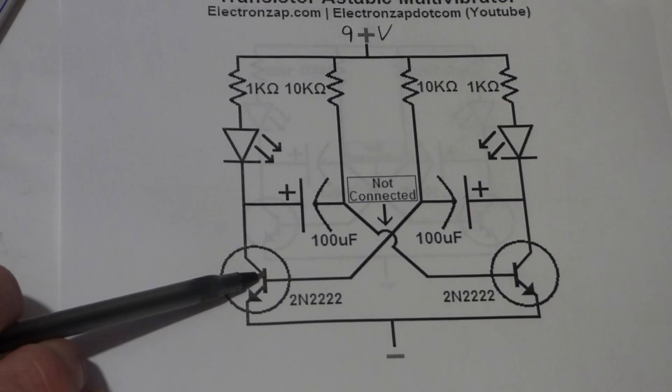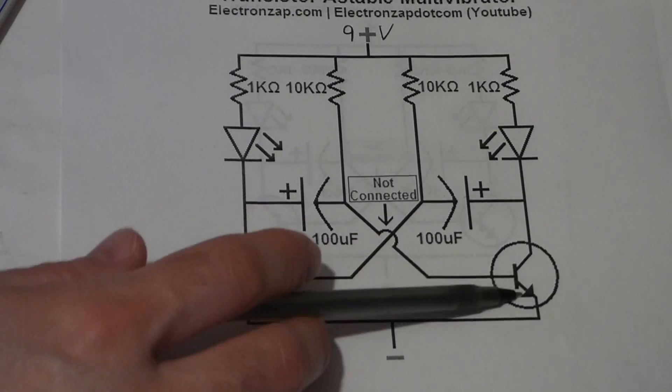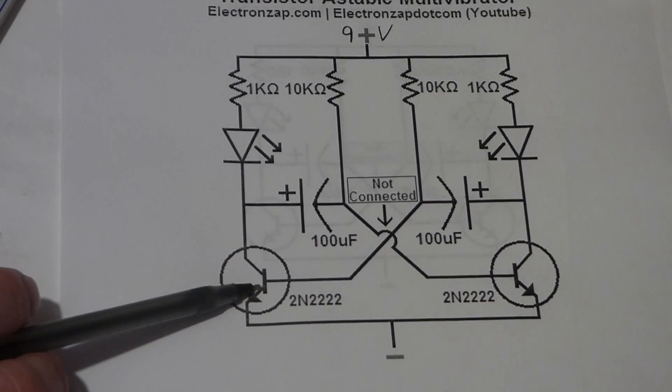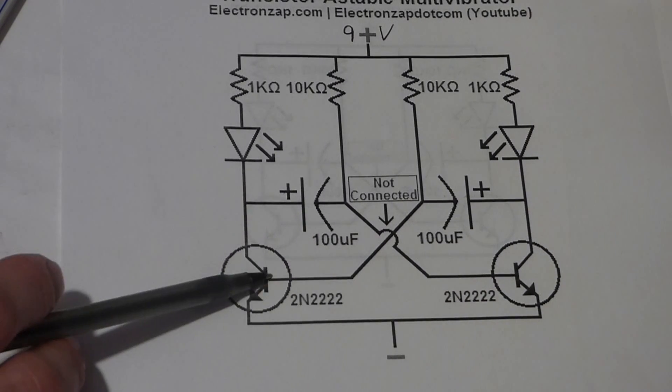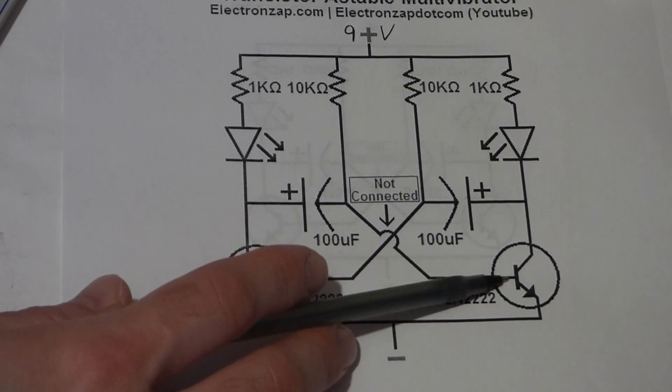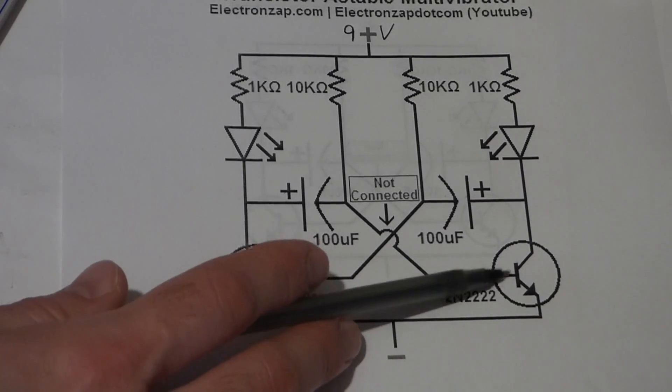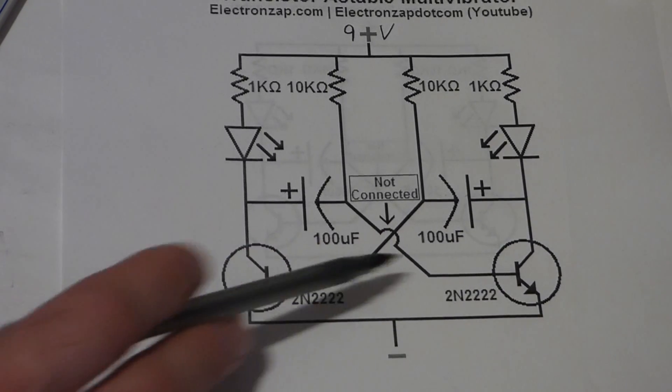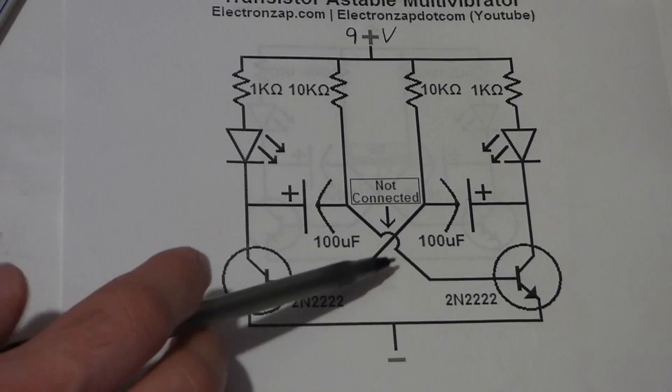So now to turn the LEDs on and off we're mostly using these transistors. Hopefully you know about transistors now. If not you really should. Transistors are used as switches and amplifiers and this circuit uses them in both ways.